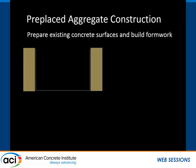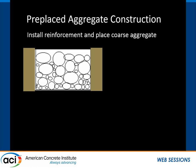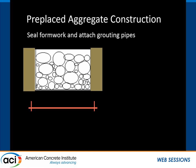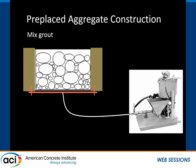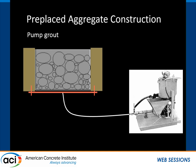Here's a graphic of what pre-placed aggregate concrete construction looks like — the 30,000-foot view. First, you prepare the existing concrete surfaces and build formwork. Then you install whatever reinforcement you may need and place the coarse aggregate, then seal the formwork at the bottom. The formwork is really important because when you put the grout in, you have to deal with head pressures as well as the pressure of injecting the grout. Then you mix the grout and finally pump it.